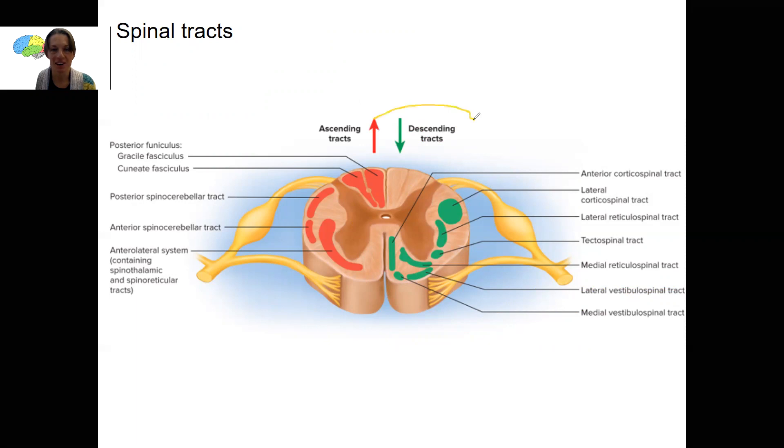Why might I be showing you this right now? Well, descending tracks, these are our motor tracks, right? Do you see one here that you maybe should know now? Anterior corticospinal tract and lateral corticospinal tract. This is just referring to where they are right in the spinal cord. Here's the lateral one. Here's the anterior one in the front.